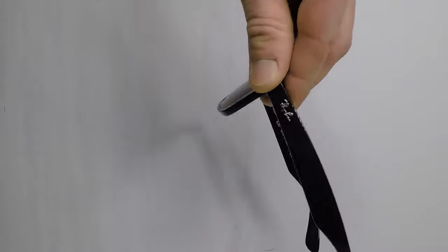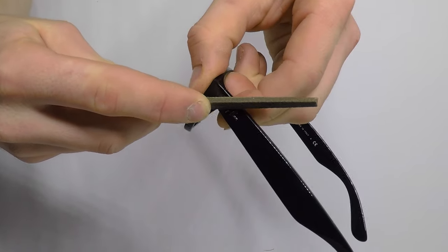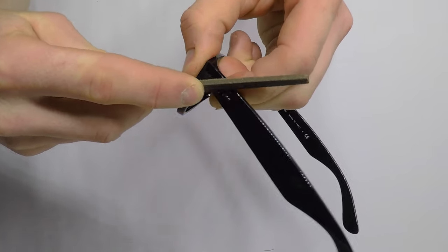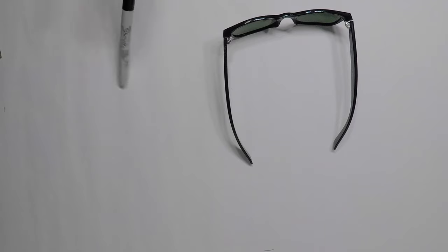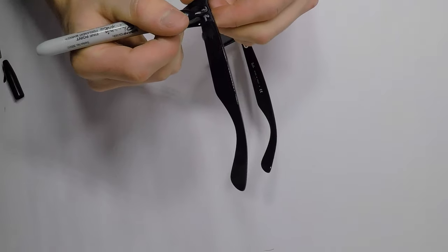Now, get a file and file down the side Ray-Ban logos where it sticks out. We want no one to know that these used to be Ray-Bans. Cover those side logos up with a black sharpie. You want to hide everything.